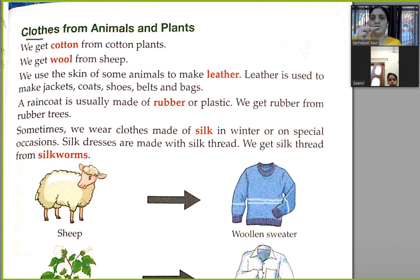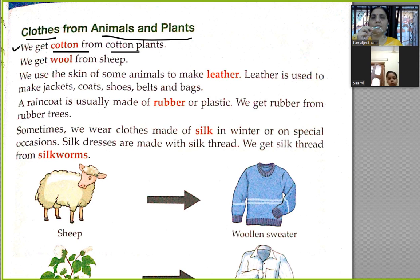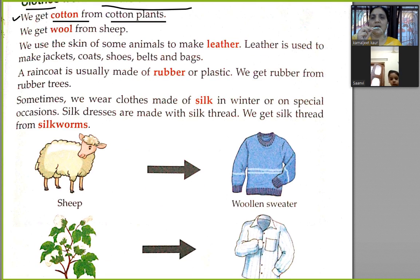Clothes from animals and plants. We get cotton from cotton plants. We get wool from sheep.